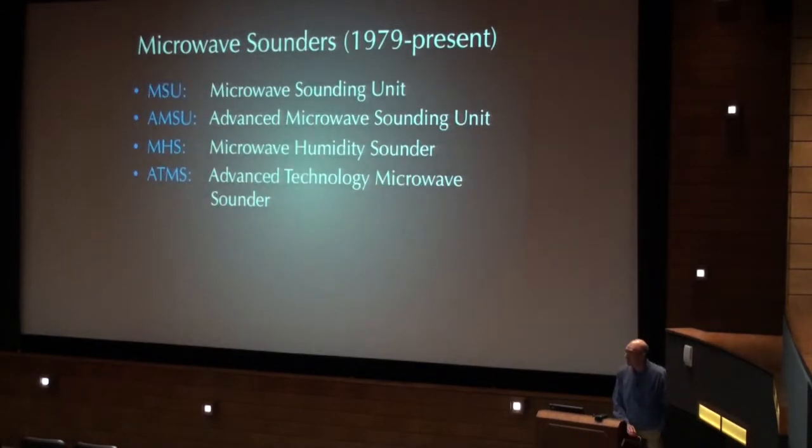We also have a sounder dataset that's fairly rich from the late 1970s onward. The sounders, however, are not historically used much for cloud properties. They are used to look at things like ice water path and to estimate precipitation. These are cross-track scanners with larger footprints, but they do have some use, and I'll actually talk about those a little bit as well later.